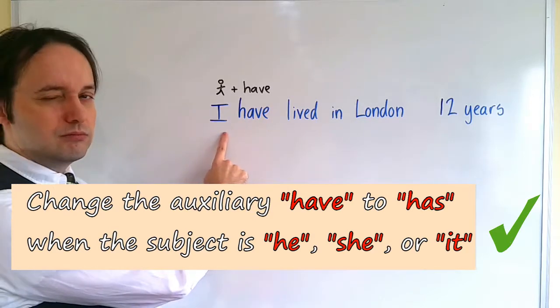So let's have a look how we would make this sentence to describe my situation. I have lived, because we know the structure. Always subject plus have, the auxiliary verb, the helping verb. But if it's he, she, or it, has. We change have to has. I have, you have, he has, she has, it has, we have, they have.